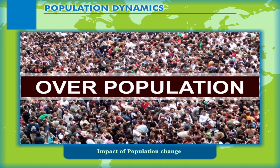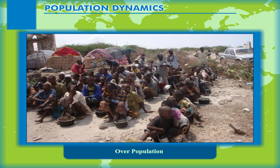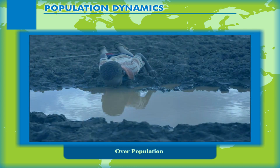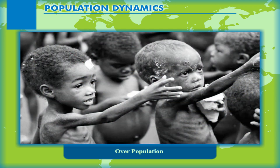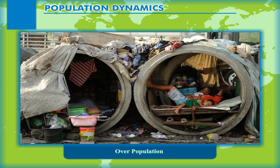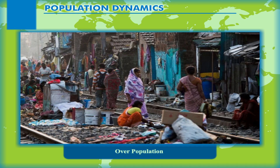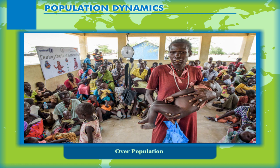Population growth and economic development are intimately related. All developing countries have a high growth rate. High growth rate has its impact on food supplies, and many African countries are suffering from food shortage, leading to malnourishment. Moreover, a high growth rate of population creates scarcity of residential houses. Rents of land and houses become very high, and as a result, poor people are forced to live in slums with limited amenities of drinking water, electricity and drainage.